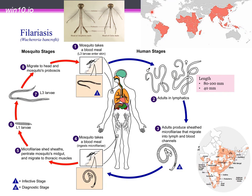Around 40% of cases are reported in African regions, especially in the tropics. This condition is known as Lymphatic Filariasis, and mosquitoes are a major vector involved in transmission.